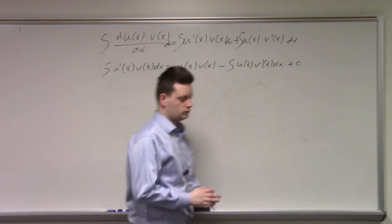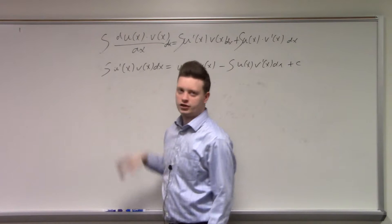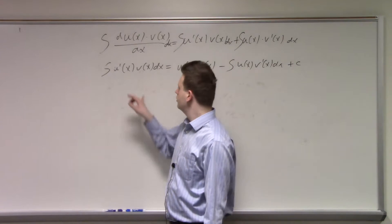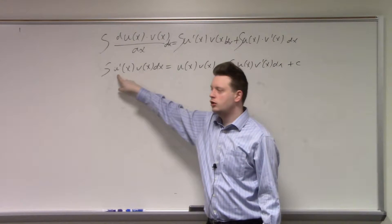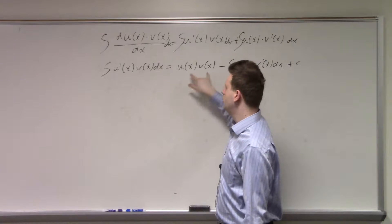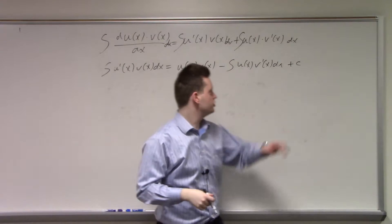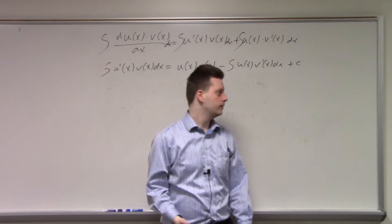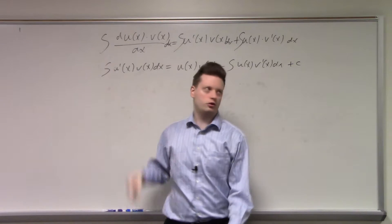Now, let's assume you have a u function and a v function multiplied with each other that you want to integrate. What you can say then is, it is one of the functions integrated minus the integral of this expression, but this time the other function differentiated, so u' here. How does that help? Well, we really did just replace one integral with another, right?